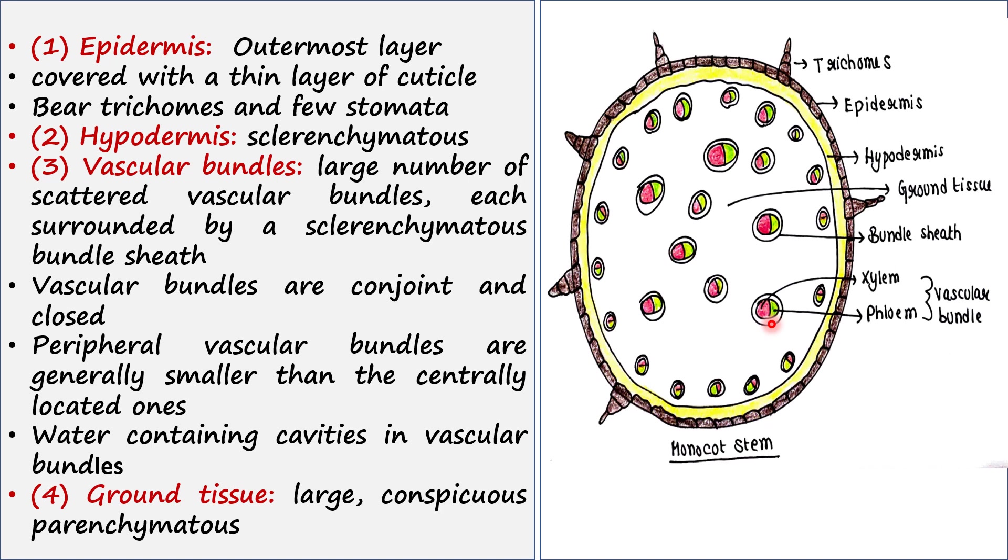The peripheral vascular bundles, you can see, are generally smaller than the centrally located ones because centrally located vascular bundles are bigger in size. In vascular bundles you can find some water cavities.